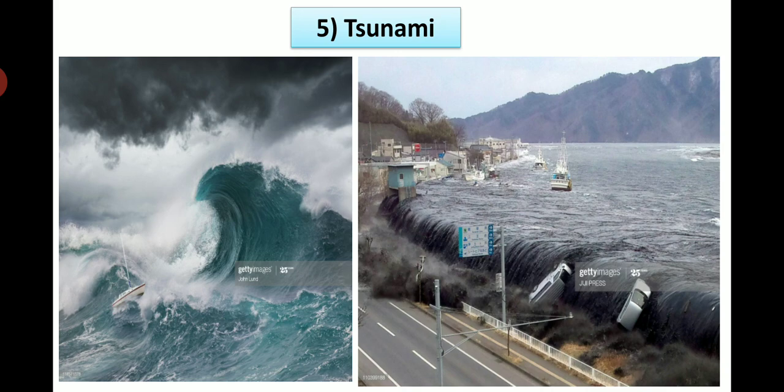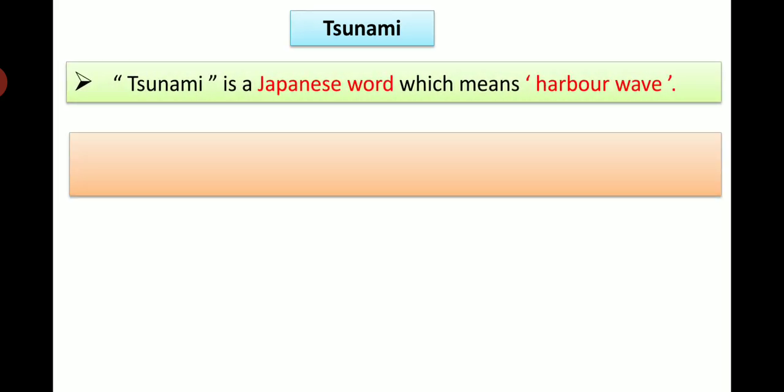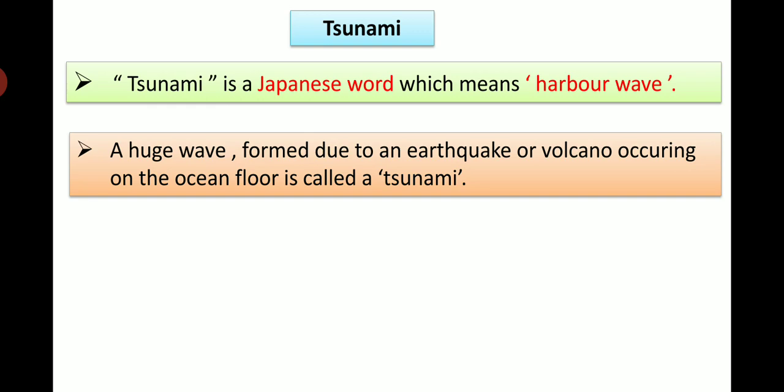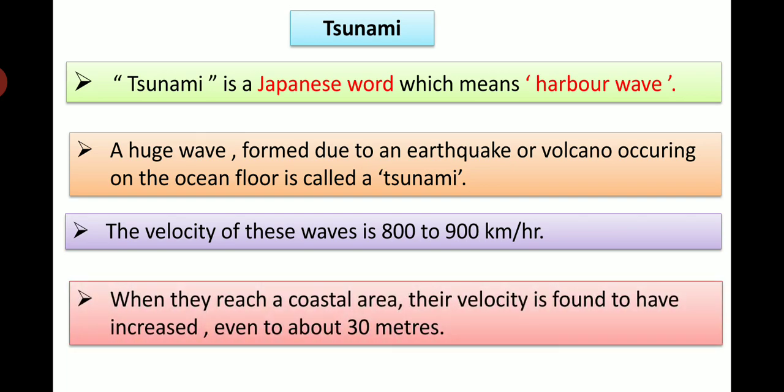Now the next disaster is tsunami. We can see pictures of tsunami here. Tsunami is a Japanese word which means harbor wave. A huge wave formed due to an earthquake or volcano occurring on the ocean floor is called a tsunami. The velocity of these waves is 100 to 900 km per hour. When they reach a coastal area, their velocity is found to have increased even to about 30 meters.